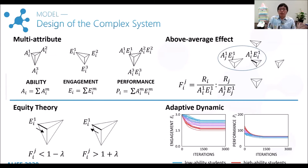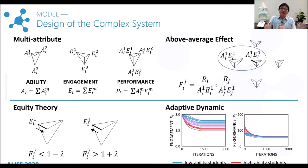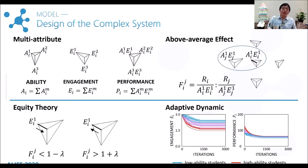Let's focus on our model design. We introduce some popular and well-accepted knowledge in education. The first one is the multi-attribute phenomenon. In our model, we set three attributes to compose a student's ability, and each attribute has an engagement level from 0 to 1. The evaluation of a student's performance is the inner product of the ability and engagement vectors. Besides, we introduce the above-average effect, meaning most people think they belong to the better half in their environments, because people usually judge their values based on their advantages. In our model, we let agents make comparisons based on their best-performed attributes. We also introduce the equity theory that we have explained already. Then we simulated the adaptive dynamics in classrooms and got the equilibrium quickly.